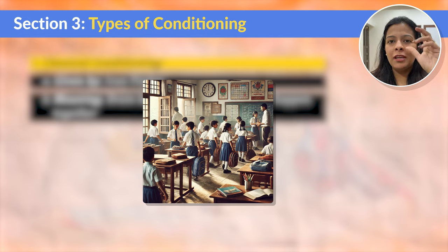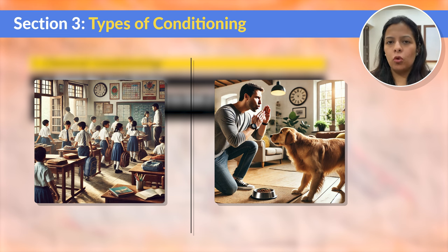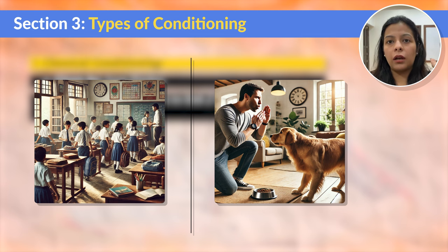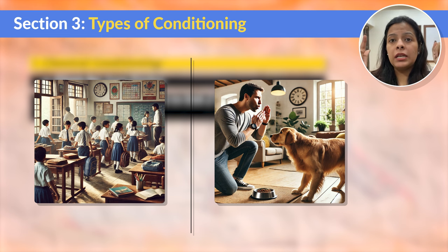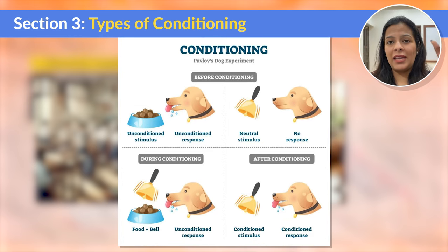Let me give you another example. Suppose you have a dog at home — let's call him Bruno. Every time we want to call him for food, we whistle. Over the course of some days, Bruno will start associating your whistle with food. This association happens at Bruno's subconscious level. This was actually a very famous experiment conducted by Ivan Pavlov — known as Pavlov's Dog. In the experiment, Pavlov rang a bell and fed the dog. As he did this repeatedly, the dog started salivating at the sound of the bell alone.